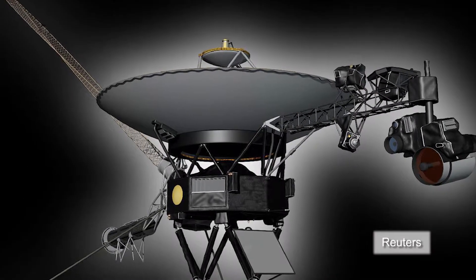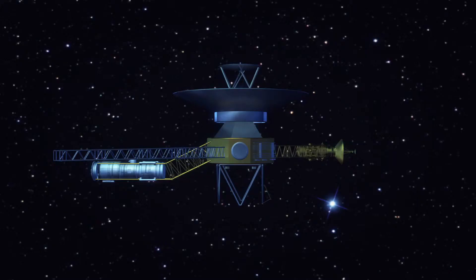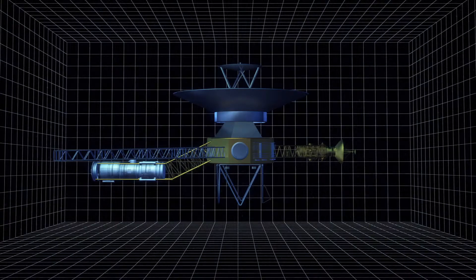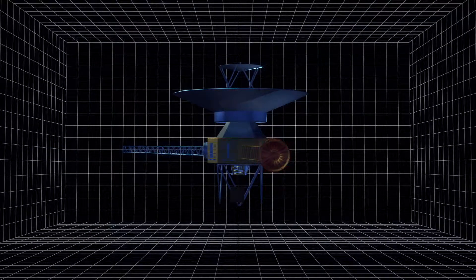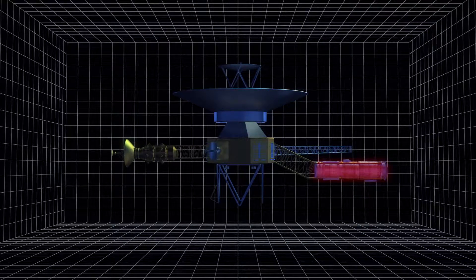The Voyager 1 spacecraft has become the first man-made object to leave the solar system. The Voyager was launched into space 35 years ago and transmits images to Earth via a communication antennae and is powered by nuclear fuel batteries.